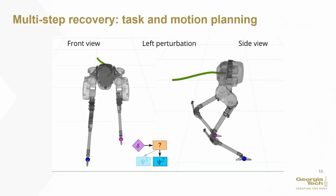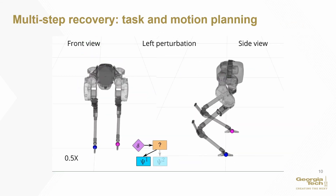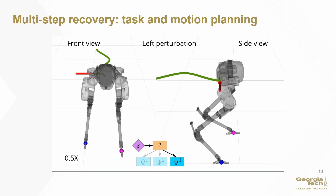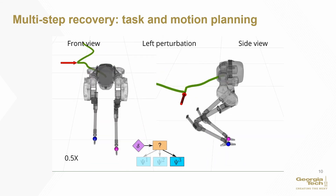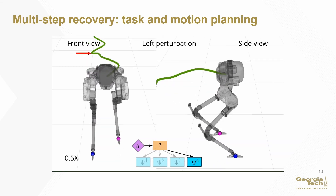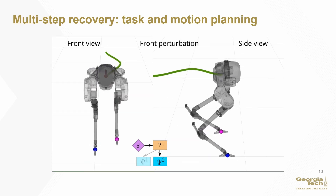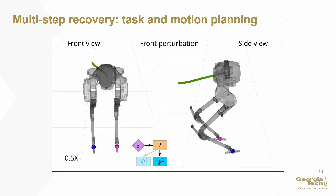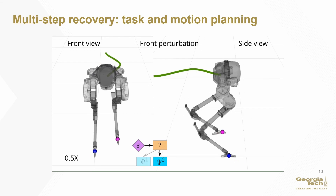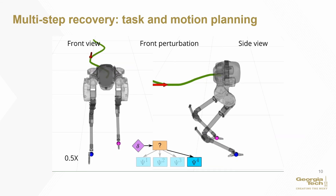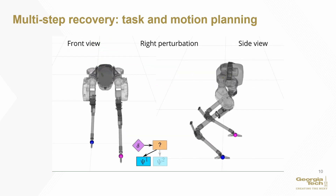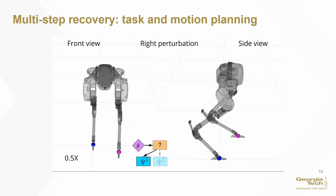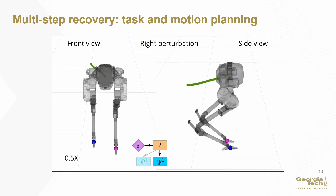Here we show stable recovery motions from multiple disturbances while walking. LTL composes the multi-step plan using the whole-body action. Perturbations from the left, back, and front can recover in one step. Perturbations to the right force a crossed-leg maneuver that transitions to a one-step recovery to return to stable walking.